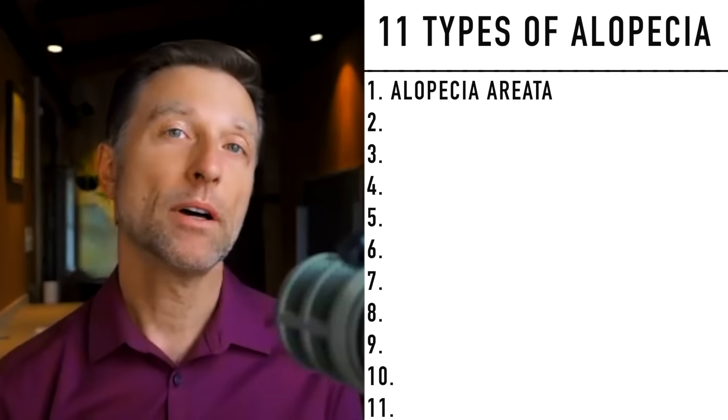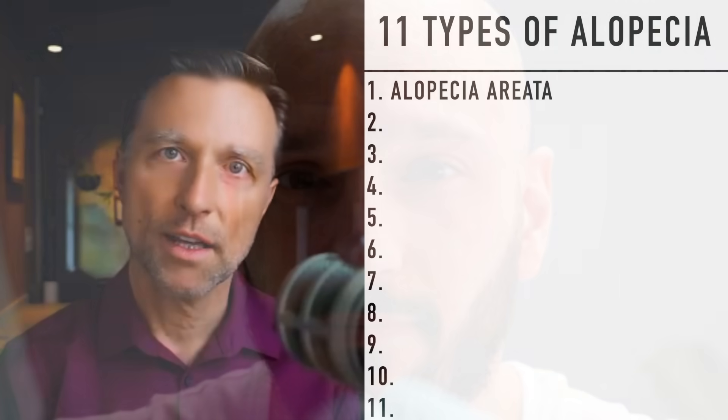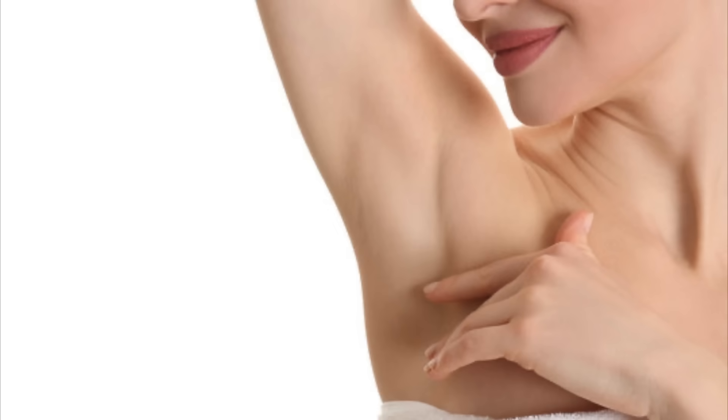Alopecia areata can worsen and become alopecia areata totalis, which means total hair loss on the top of your head. Or it can progress to alopecia areata universalis, which is hair loss throughout the entire body — including pubic hair and axillary hair, the hair underneath your armpits.